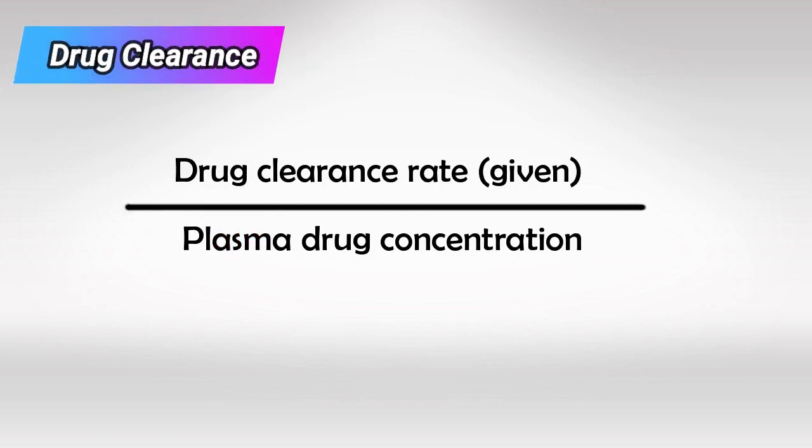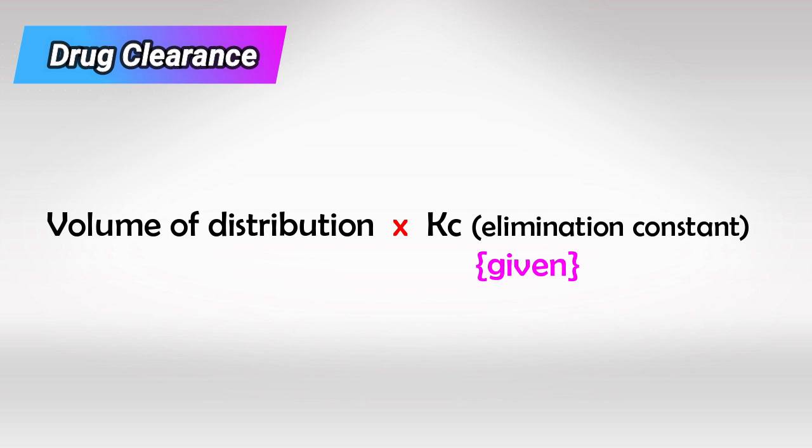Drug clearance is drug clearance rate over plasma drug concentration, or volume of distribution, which we mentioned earlier, multiplied by elimination constant, which will be given in the question.